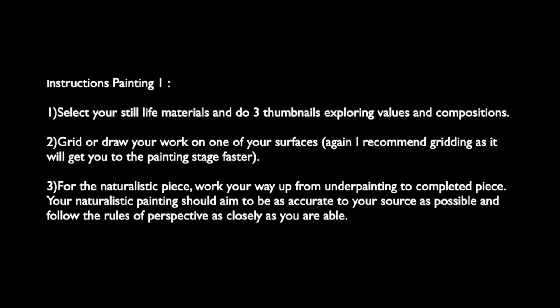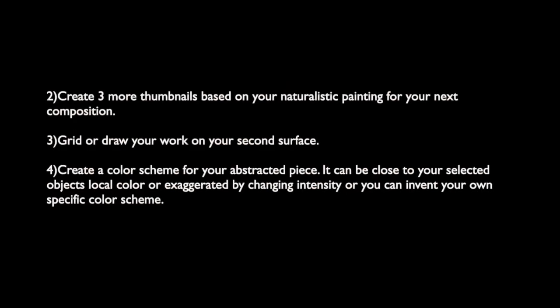I recommend working on both paintings at the same time. You will need two surfaces at 11 by 14 inches or above, your painting kit, and a color wheel — using a digital color wheel will be fine. For the first painting, select your still life materials and do three thumbnails exploring values and composition. Grid or draw your work on one of the surfaces — I recommend gridding as it'll get you to the painting stage a lot faster. For the naturalistic painting, work your way up from underpainting to completed piece, aiming to be as accurate to your source as possible and following the rules of perspective as closely as you're able. For your abstract piece, choose a stylistic option from one of the examples covered in the presentation, and please note which artist you are imitating or which kinds of abstraction you are using.